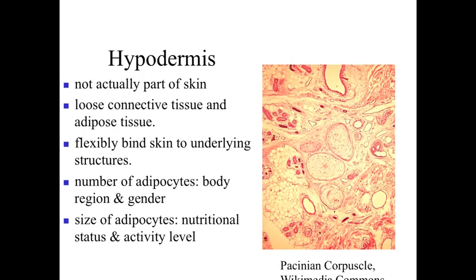Going beyond the dermis to the deeper layer, we get to the hypodermis. Technically the hypodermis is not actually part of the skin, but it makes sense to include it here as it connects the integumentary system — taking the dermis and connecting it to the underlying layers. The hypodermis is composed of loose connective tissue and lots of white adipose tissue, giving it a characteristic chicken-wire appearance on a slide, along with some large blood vessels, sweat glands, and Pacinian corpuscles visible in between the white fat.